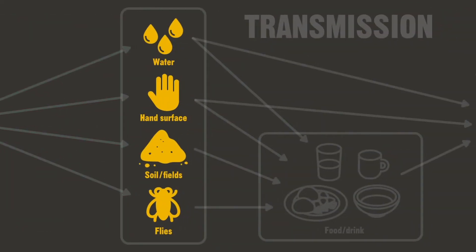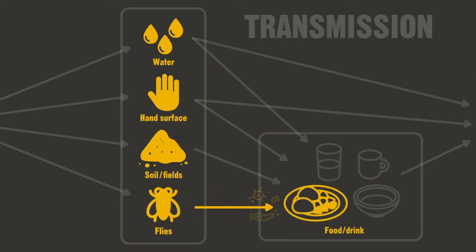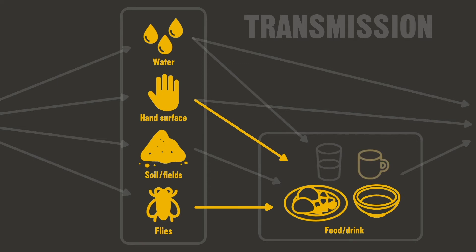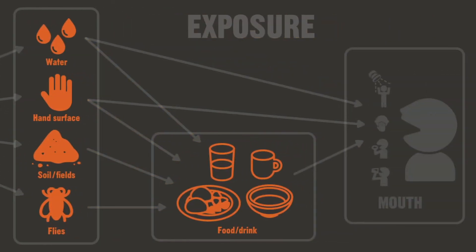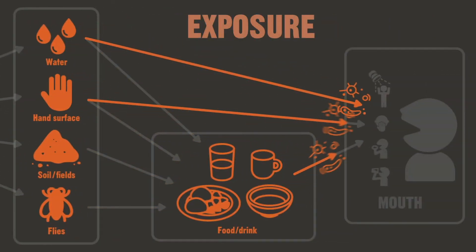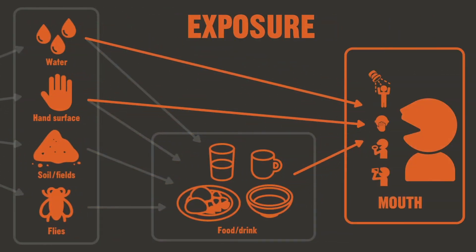For example, a fly contaminated with feces might sit on food, or a person with contaminated hands might touch dishes, glasses, and drinking water. Contamination from feces spreads in this manner. If the living environment is contaminated as described, then people will be exposed to fecal matter through various routes.